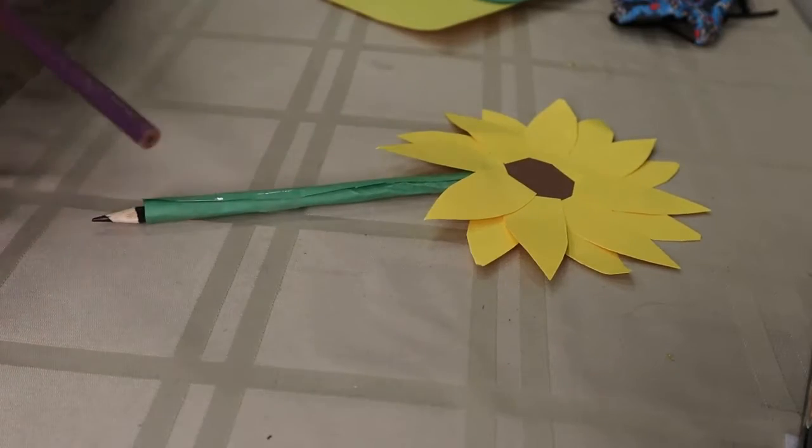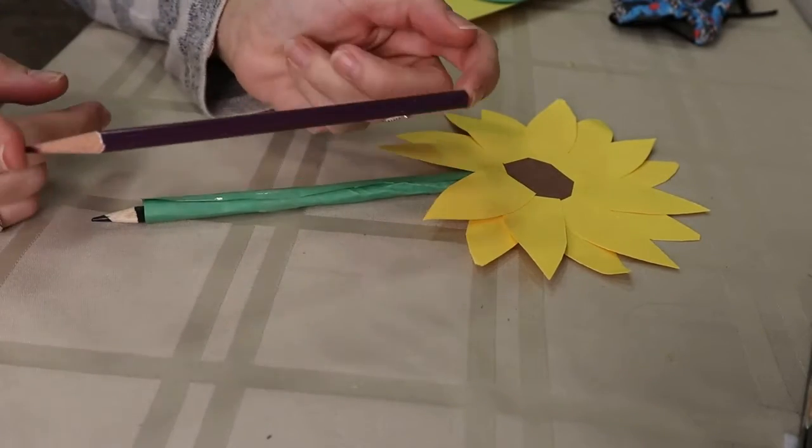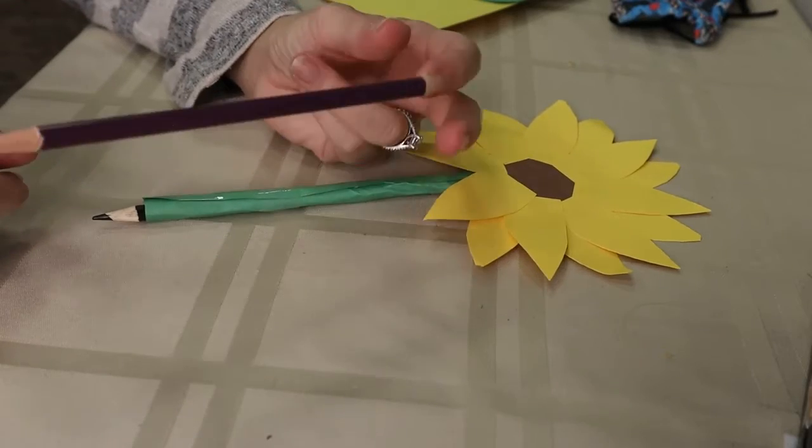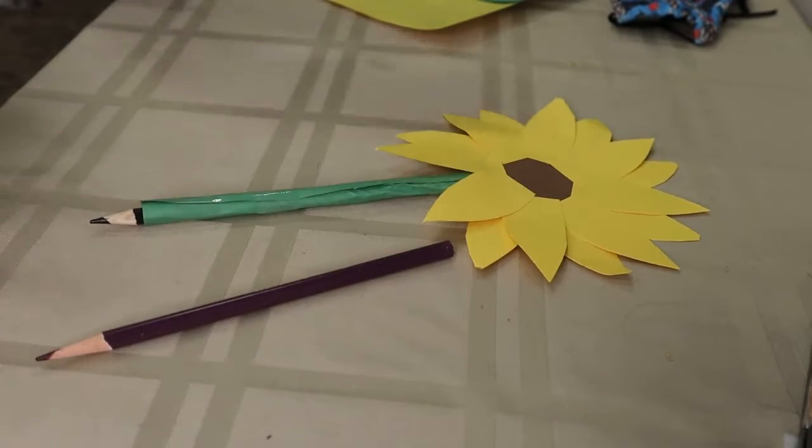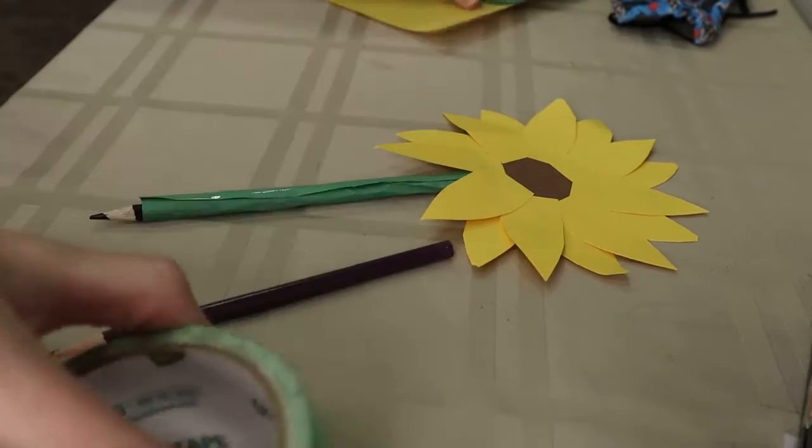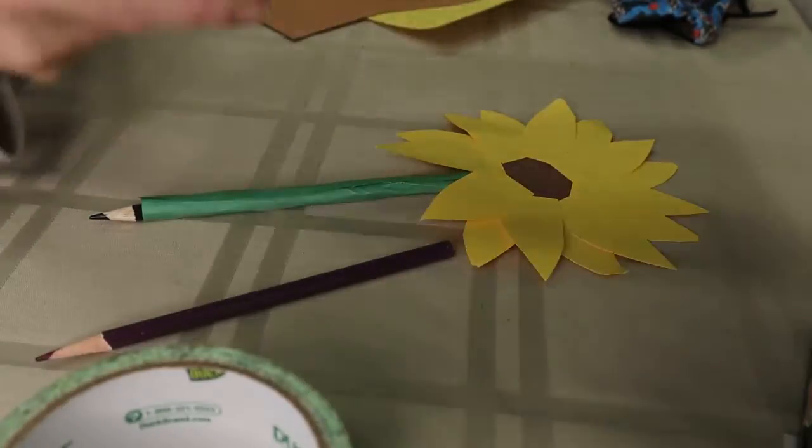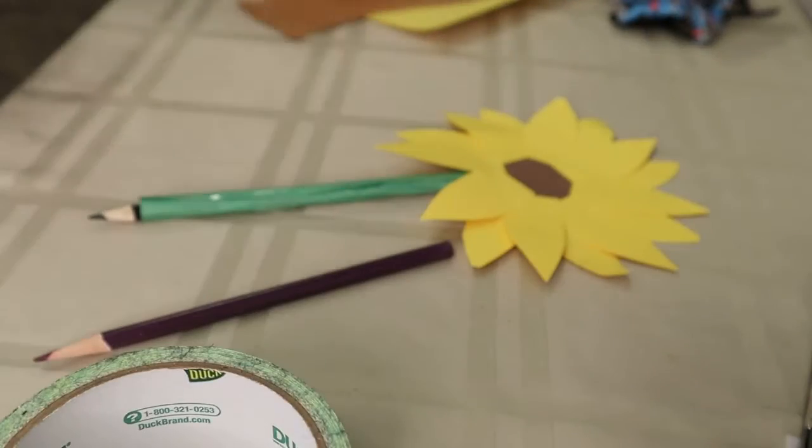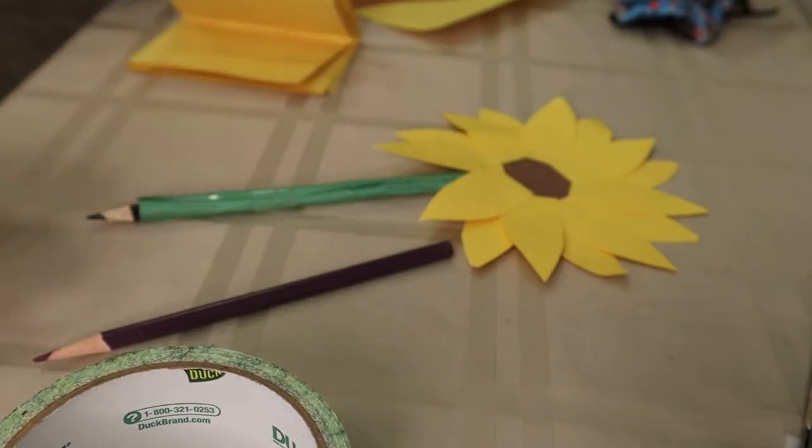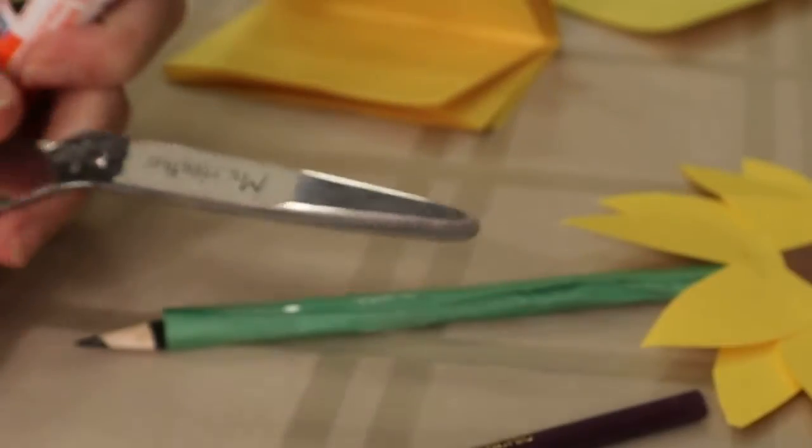For our craft, you're going to need some sort of pencil, stick, pen, marker, something that is straight and sturdy. You're going to need either green tape or green paper. You're also going to need yellow and brown paper. Don't forget your scissors. Let's get started.